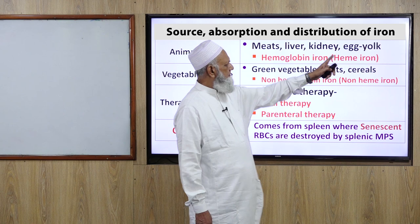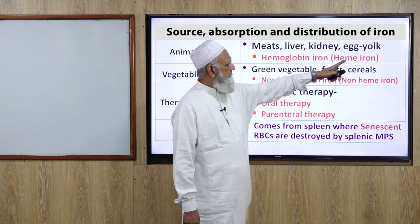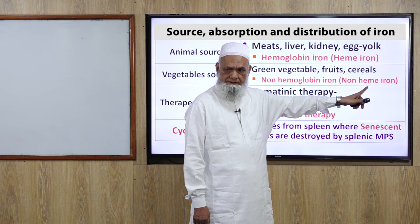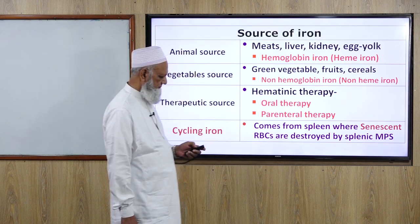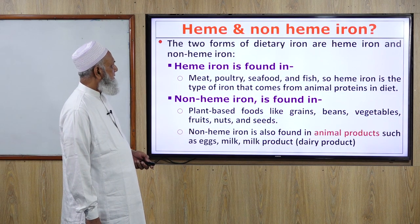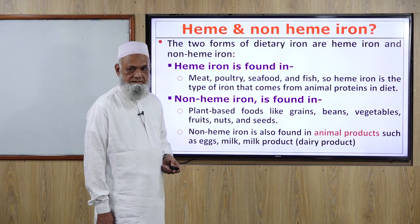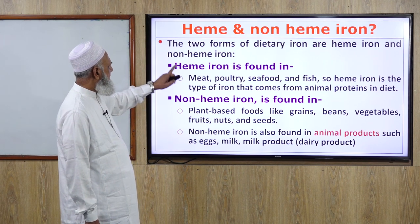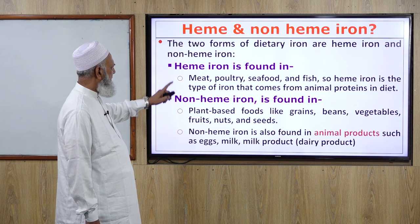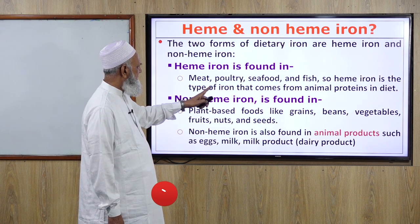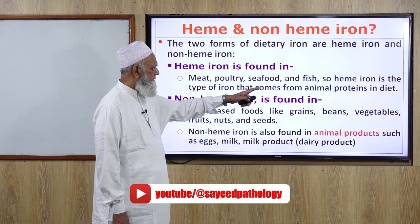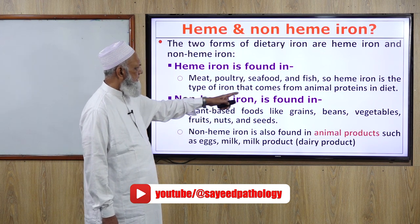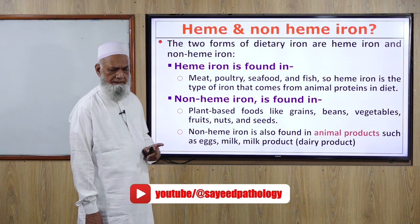Heme iron is in the ferrous form, while non-heme iron is in the ferric form. The two forms of dietary iron are heme iron and non-heme iron. Heme iron is found in meat, poultry, seafood and fish — it is the type of iron that comes from animal proteins in the diet.